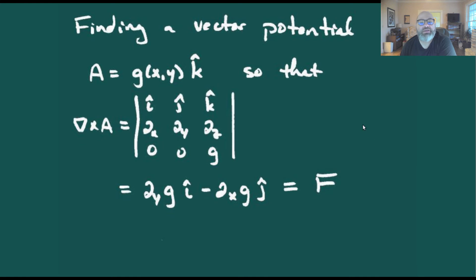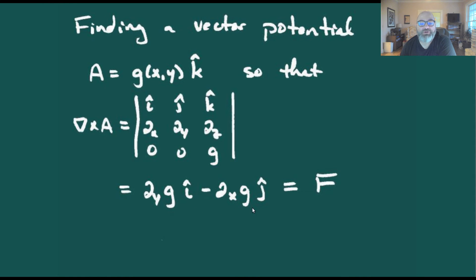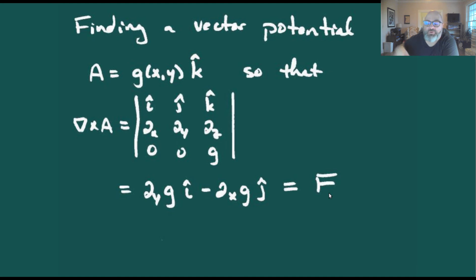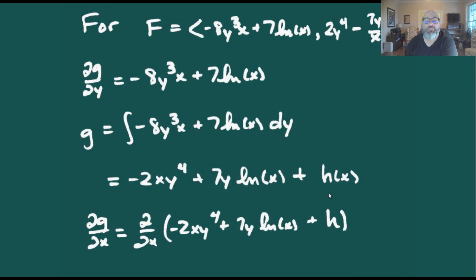So for a simply connected region, divergence is zero — this vector field is source-free. Since it is source-free, we can find a vector potential. In two dimensions, our vector potential takes the form of a scalar function g in the z direction. Taking the curl of that gives us: partial y of g in the first component minus partial x of g in the second component, and we set that equal to our original vector field f.